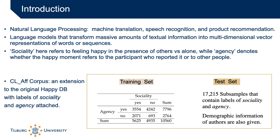Sociality refers to feeling happy in the presence of others or alone, while agency denotes whether the happy moment refers to the participant who reported it or to other people. For the dataset, there is already a corpus called CLAFF corpus where sociality and agency are annotated as an extension to the original HappyDB database. The corpus has 10,560 labeled training samples with labels identifying agency of the participant and the sociality of the event.